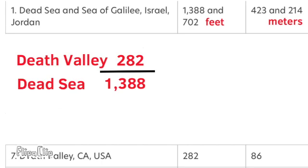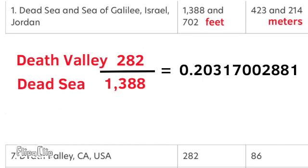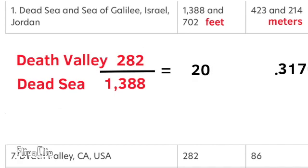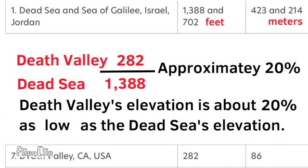282 divided by 1,388 equals a long decimal, which is approximately 20%. This tells me that Death Valley's elevation is about 20% as low as the Dead Sea's elevation.